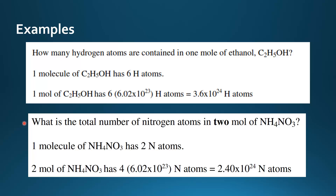Let's try another example. What is the total number of nitrogen atoms in 2 moles of NH4NO3, which is ammonium nitrate? One molecule of ammonium nitrate has 2 nitrogen atoms, but the question asks for the number in 2 moles. So 2 moles of ammonium nitrate has 4 times Avogadro's number, which equals 2.40 x 10²⁴. This is because 1 mole would have 2 times Avogadro's number, and 2 moles would have 4 times Avogadro's number of nitrogen atoms.